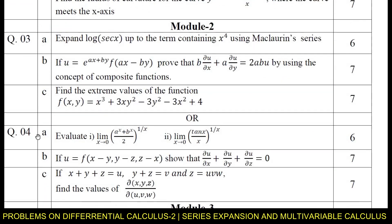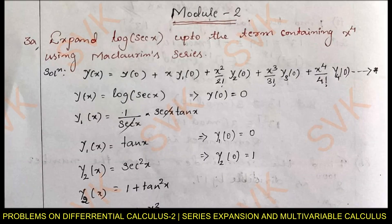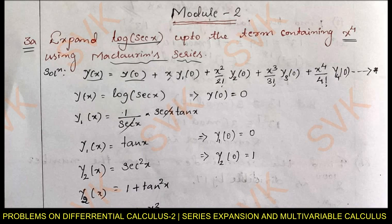I will be discussing equation numbers 3 and 4. Moving on to the solution, consider question number 3a: expand log(sec x) up to the term containing x⁴ using the McLaurin series. Using McLaurin series, we require the expansion of log(sec x) up to x⁴. By McLaurin series expansion, the series is: y(x) = y(0) + x·y₁(0) + (x²/2!)·y₂(0) + (x³/3!)·y₃(0) + (x⁴/4!)·y₄(0).